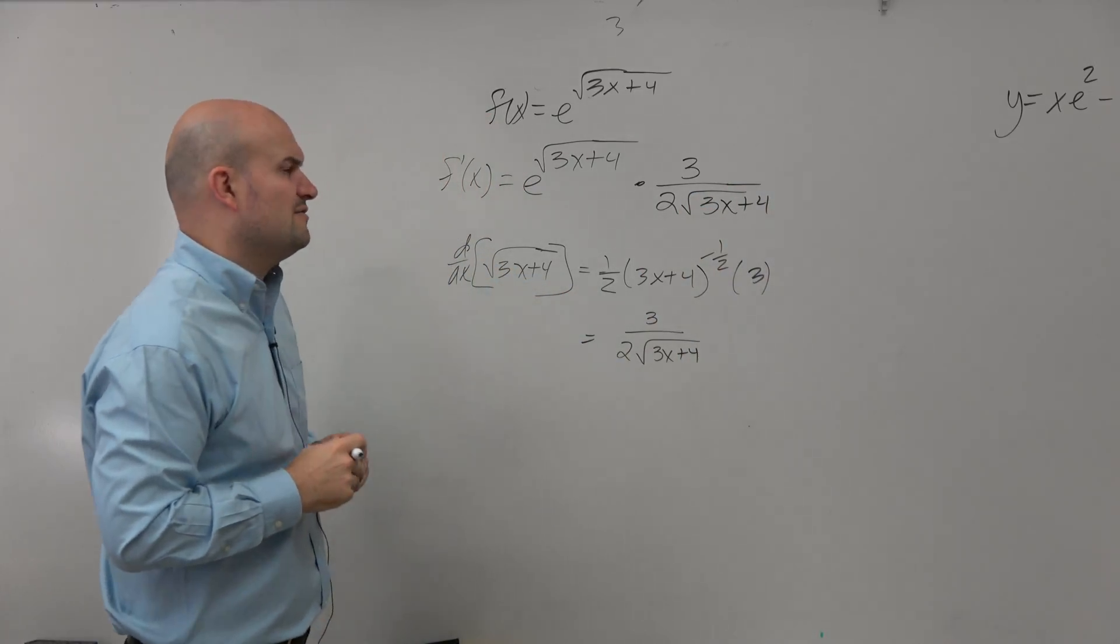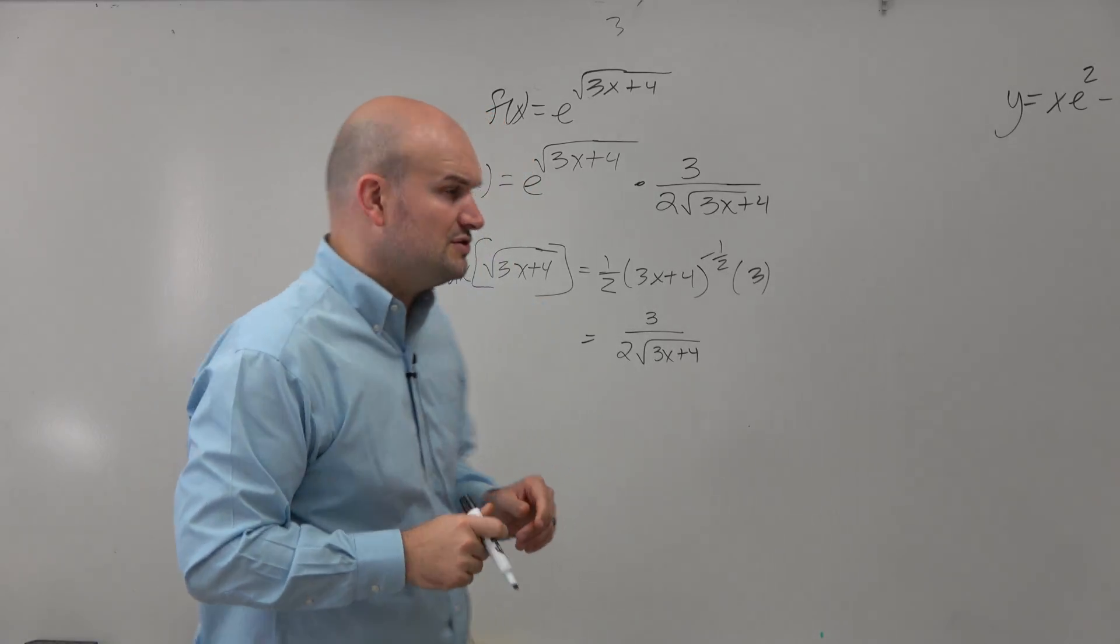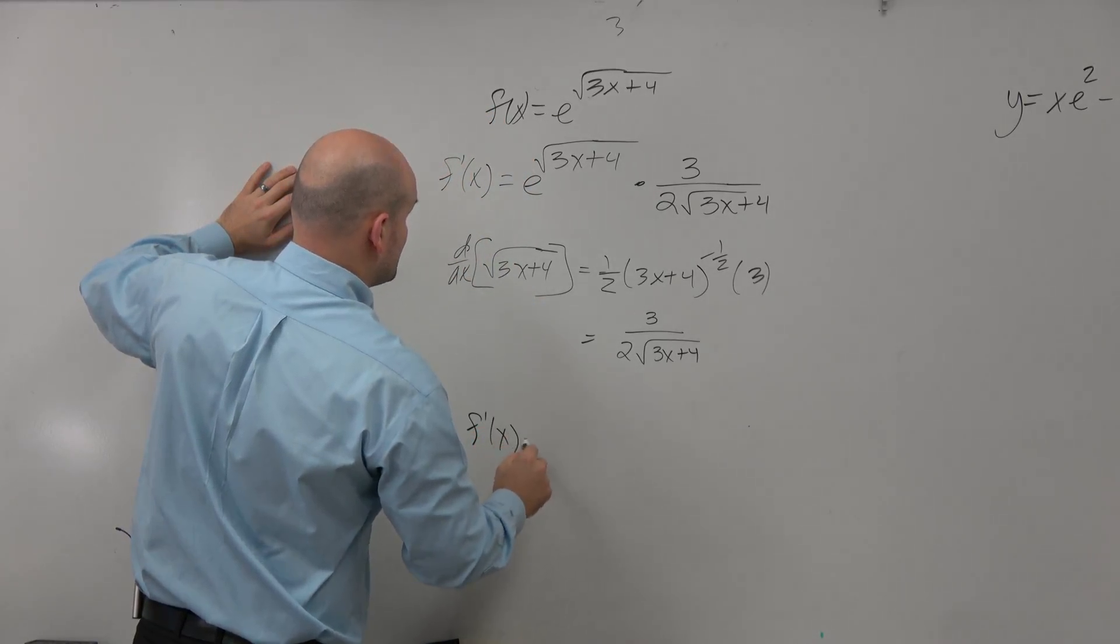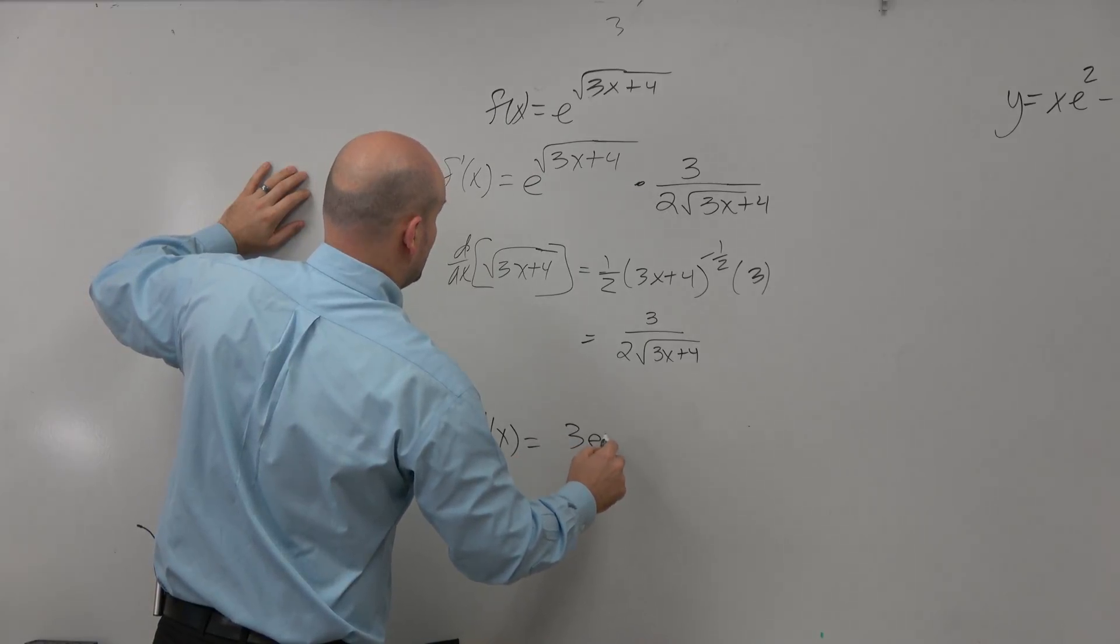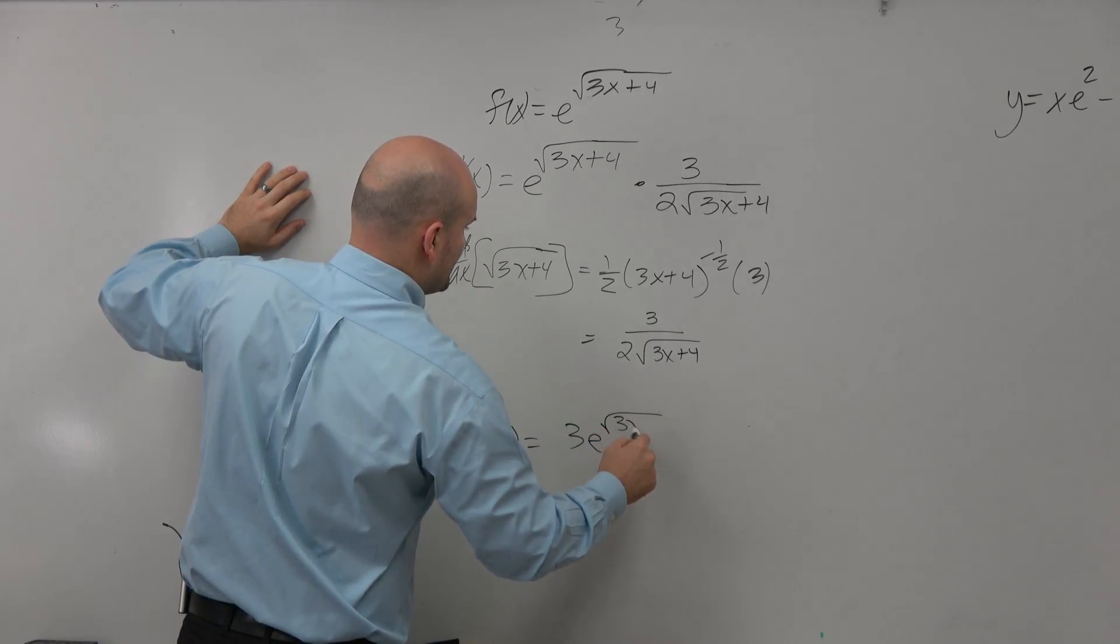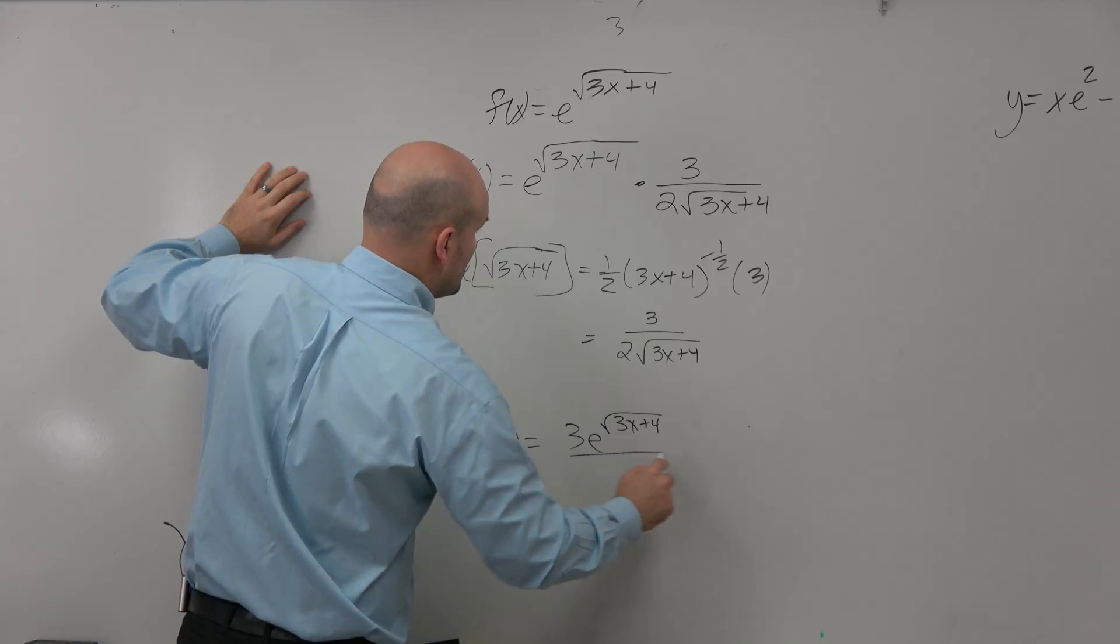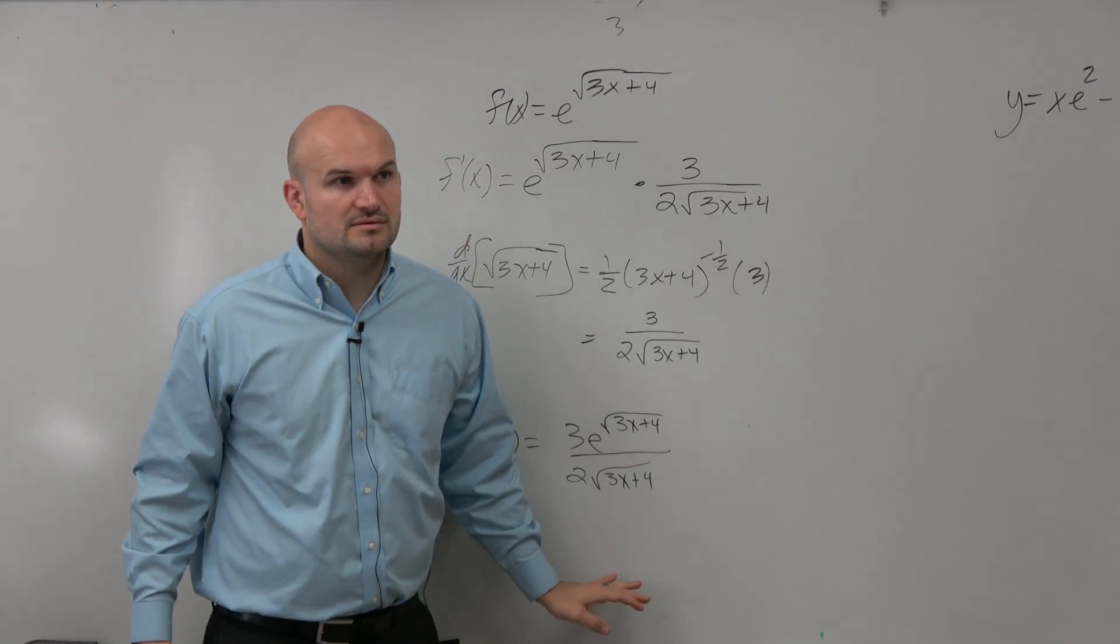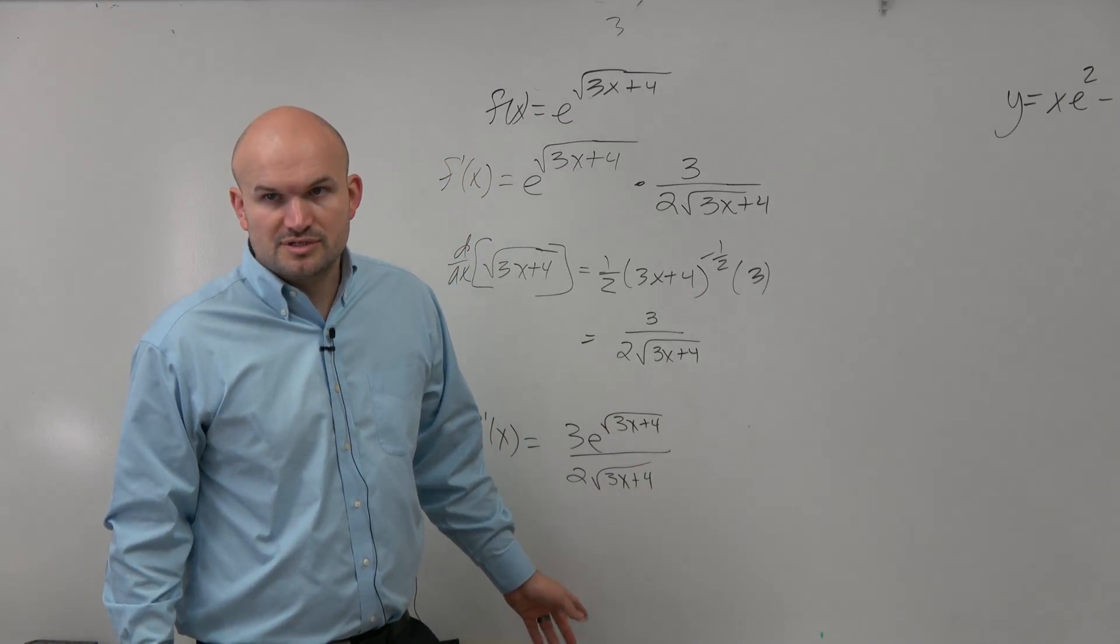Now, it looks like they gave you multiple choice solutions. So I'm looking at f prime of x equals 3e to the square root of 3x plus 4 all over 2 square root of 3x plus 4. They didn't rationalize the denominator. That's an answer choice.